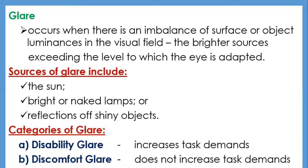Sources of glare include the sun, bright or naked lamps, and reflections of shiny objects. Glare is divided into two categories: disability glare and discomfort glare. Disability glare increases task demands, while discomfort glare does not. Disability glare occurs when objects brighter than the task interfere with the detection of visual task data; extraneous light sources may increase the adaptation level of the retina, making the task appear dimmer. Discomfort glare may occur in offices when one or more bright objects are seen peripherally.